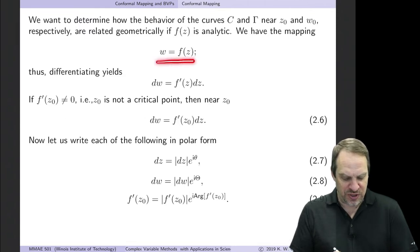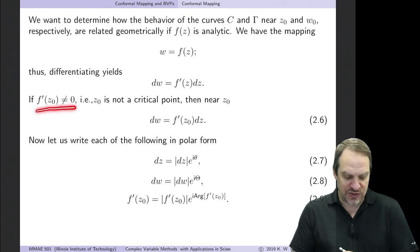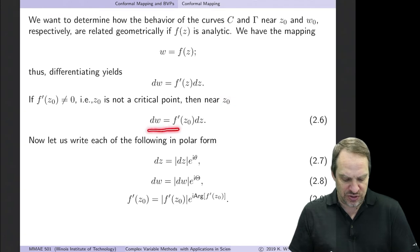So we have our original mapping w is f of z. If we differentiate that, that's dw is f prime of z times dz, just using the chain rule. Now, if f prime of z is not equal to zero at some point z₀, in other words, it's not a critical point, then near that point z₀, we know that dw is equal to f prime of z₀ times dz, just from here.